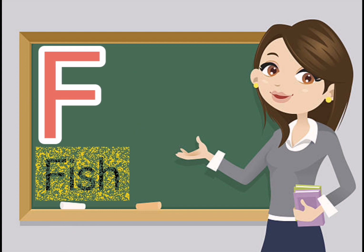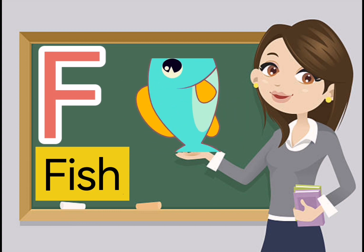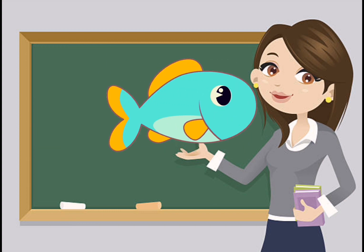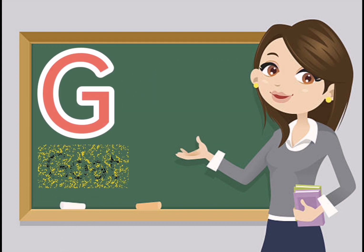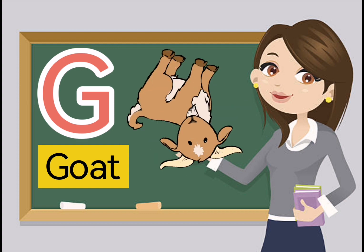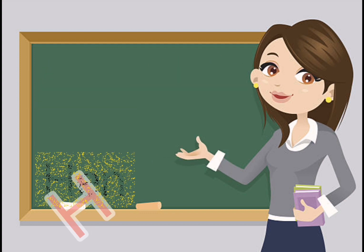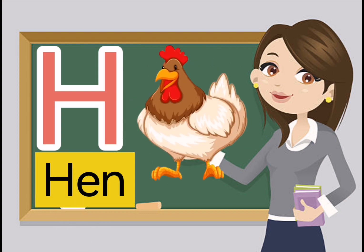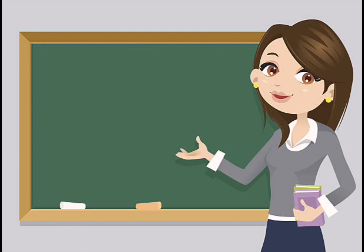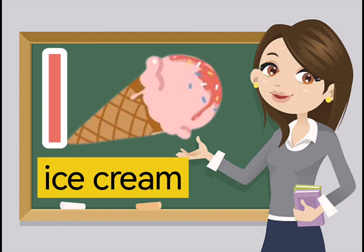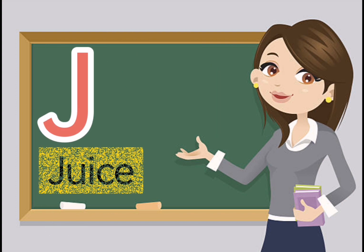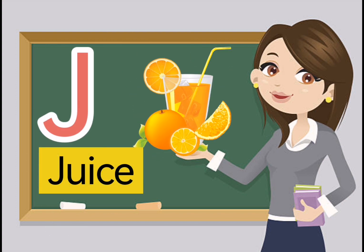F for fish, G for goat, H for hen, I for ice cream, J for juice.